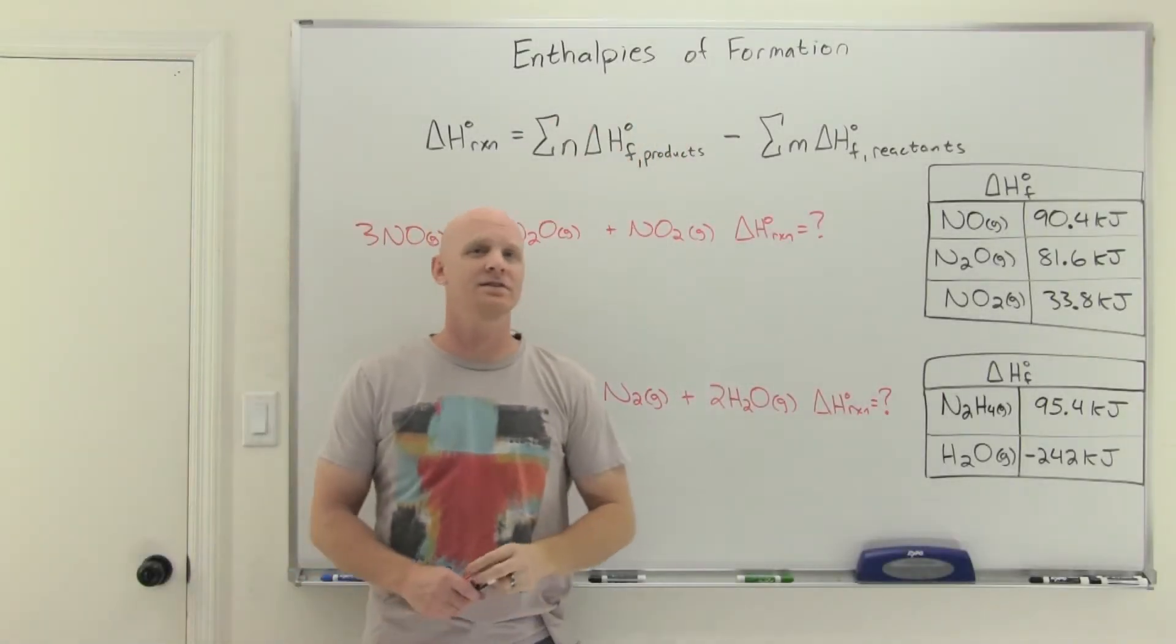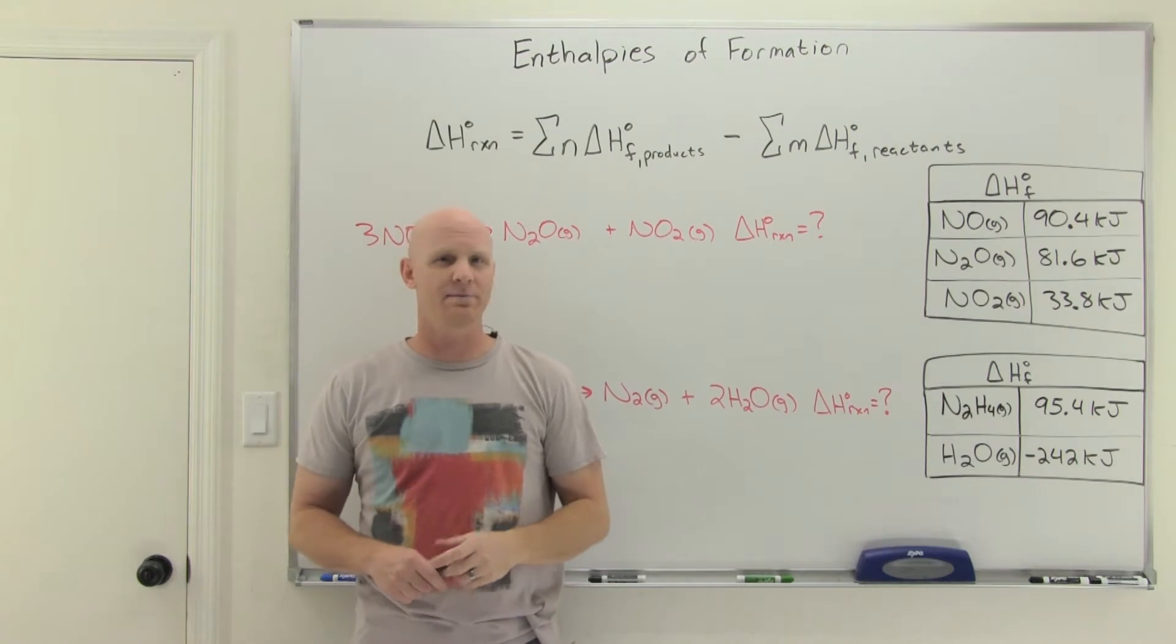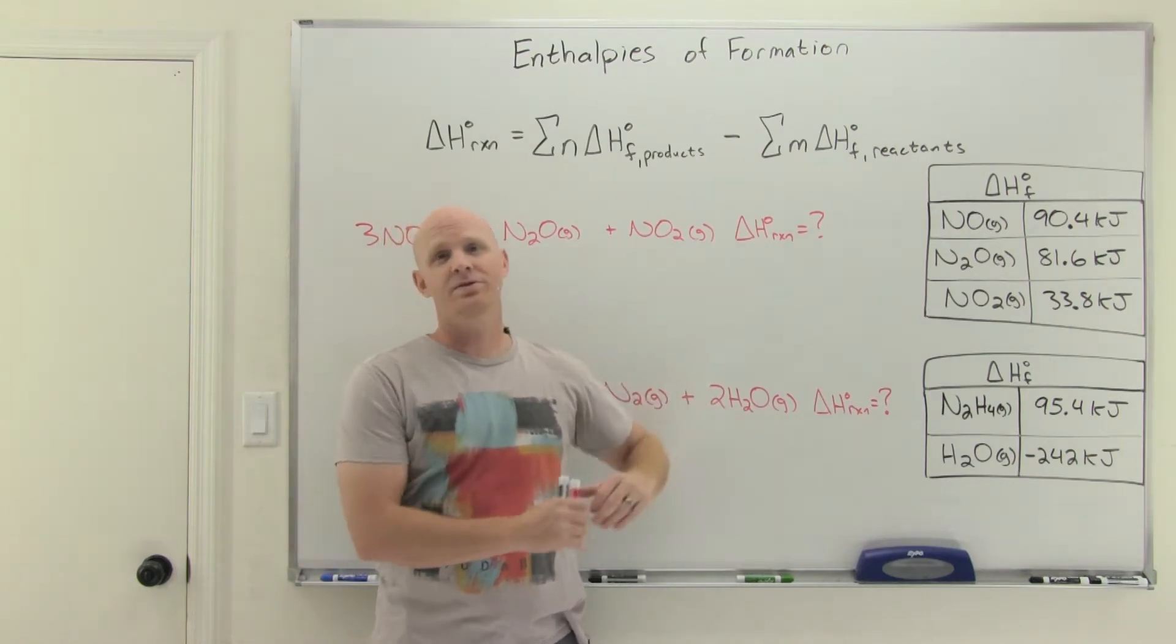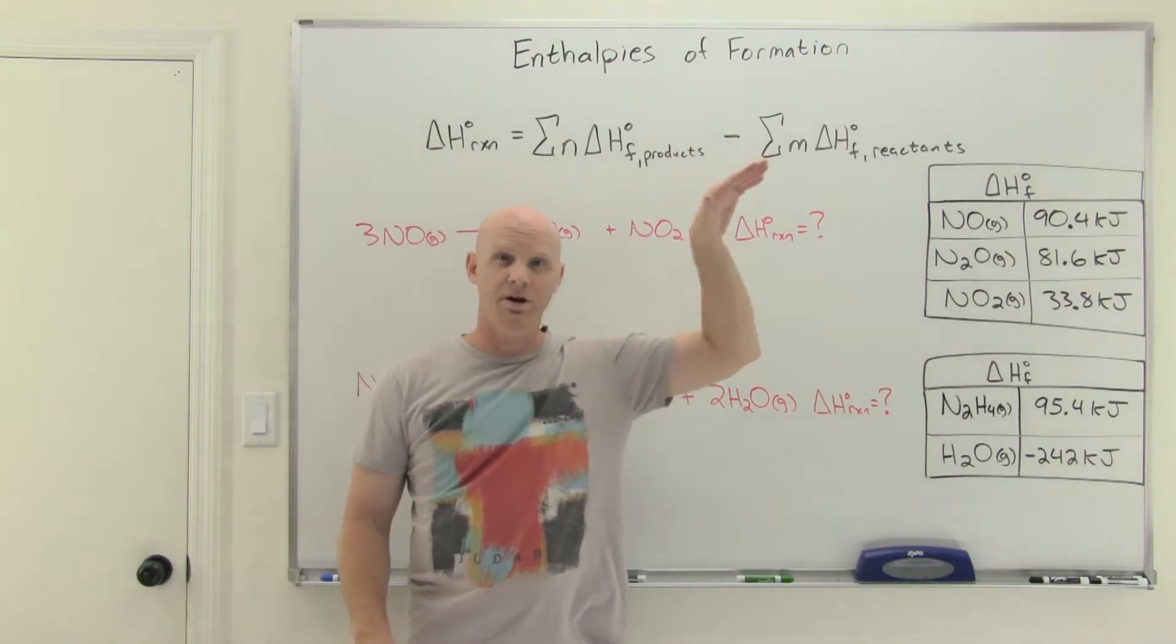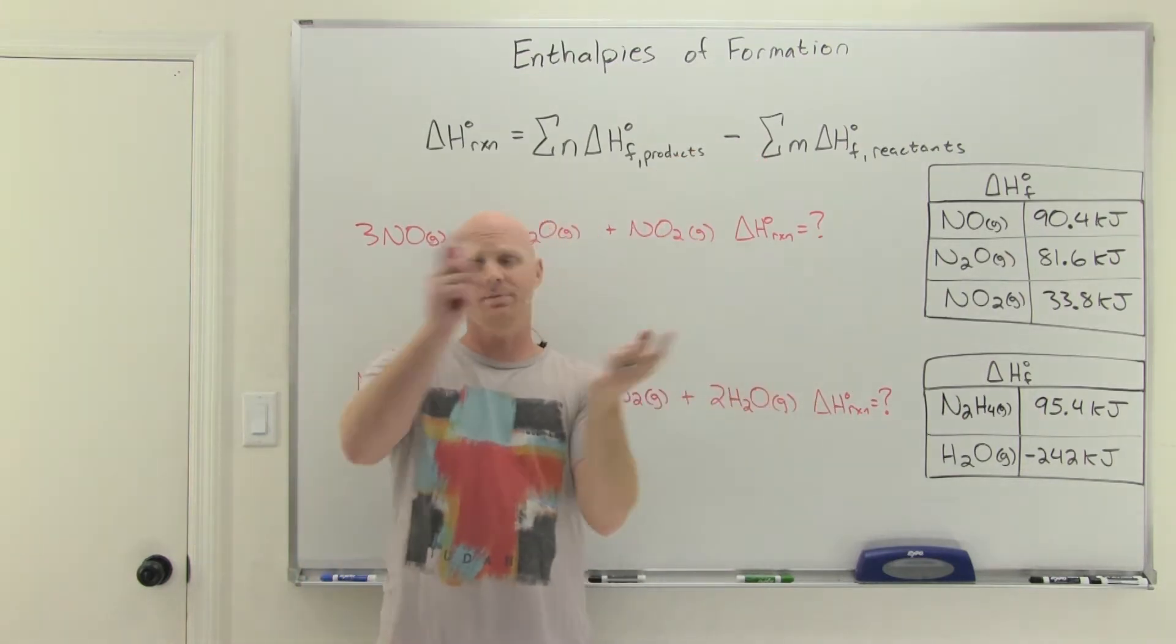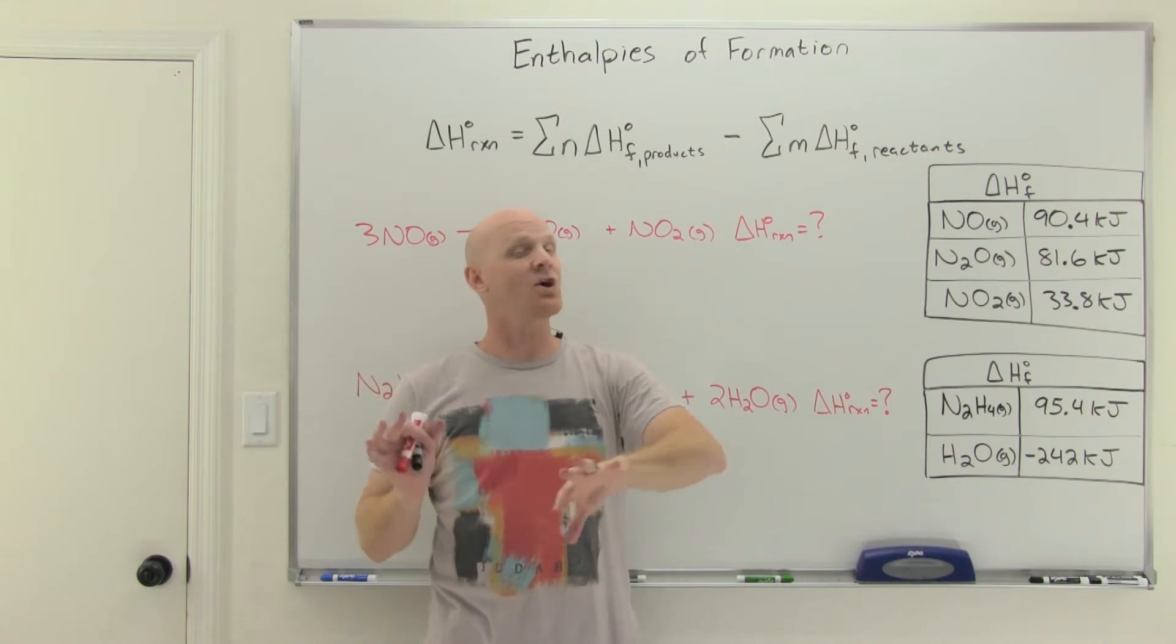Enthalpies of formation, that'll be the topic in this last lesson in a chapter on thermochemistry. In the previous lesson, we went through how to calculate delta H of a reaction using Hess's law. When you're supplied with a bunch of reactions and their corresponding delta H values, and you need to flip them around and manipulate them, that's the harder method.